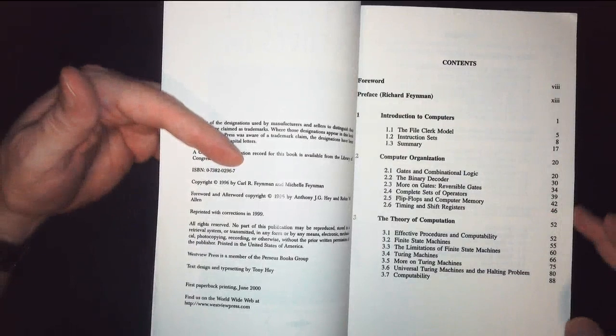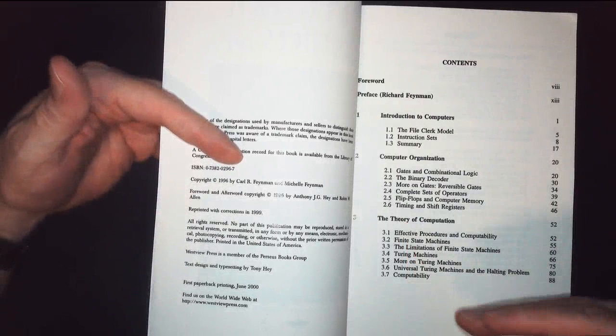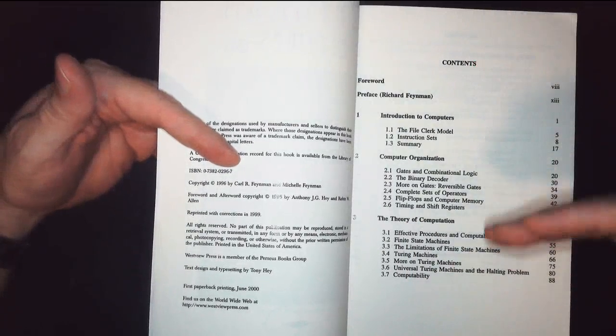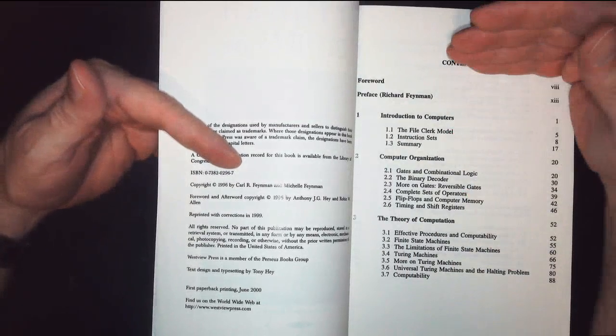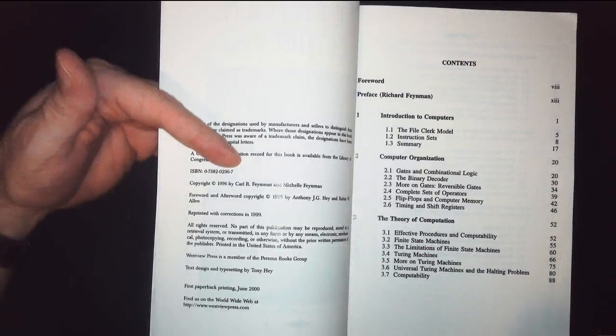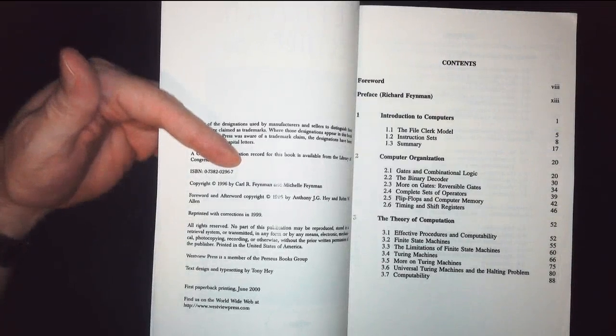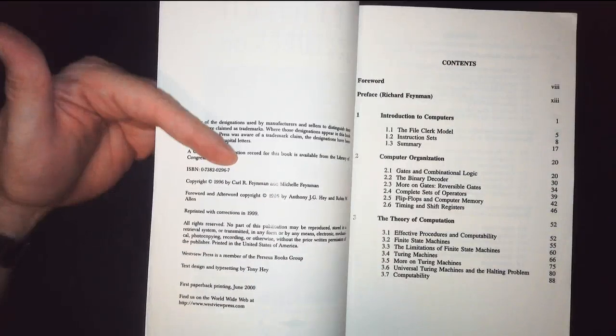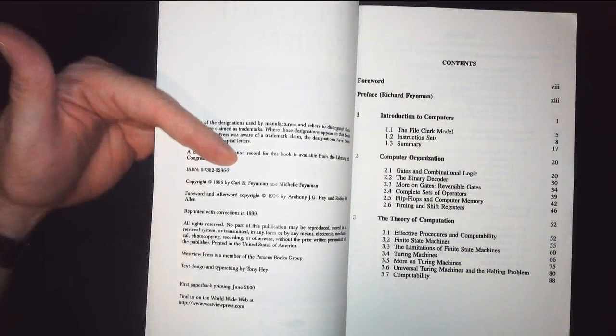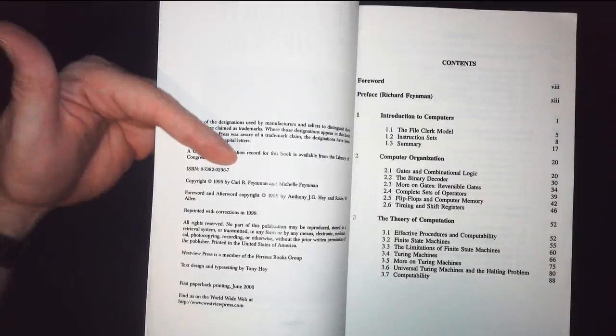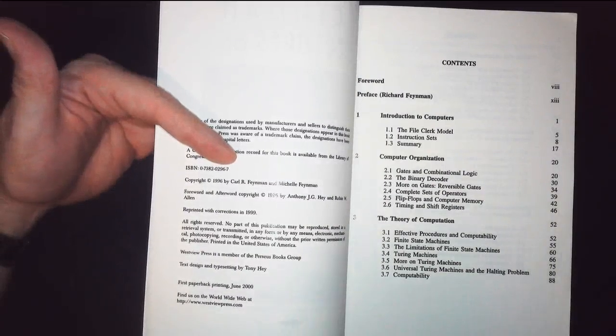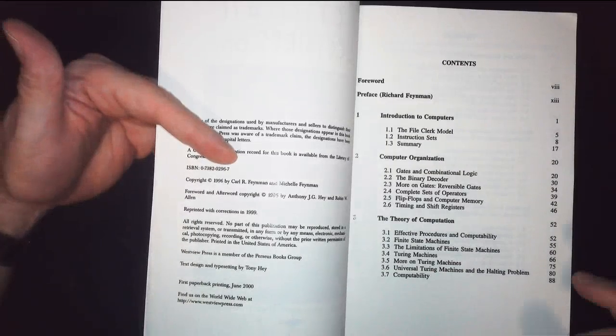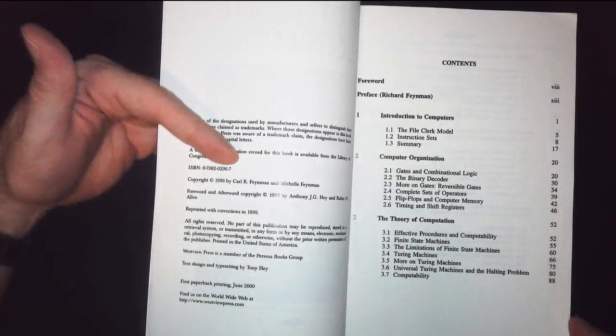And then you start to figure out different sorts of things for what you need for different sorts of operations. Timing and shift registers, things like that, very important. You need some sort of clock in your computer. So that your computer is always operating, everything is operating at the same time. That becomes very important for when you're trying to build more advanced applications.